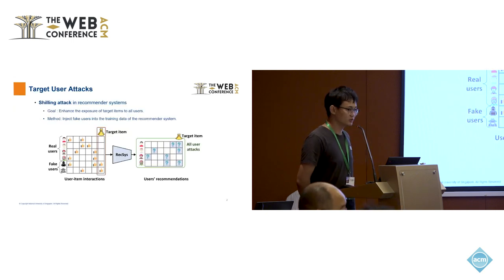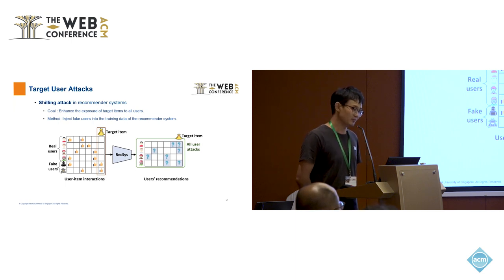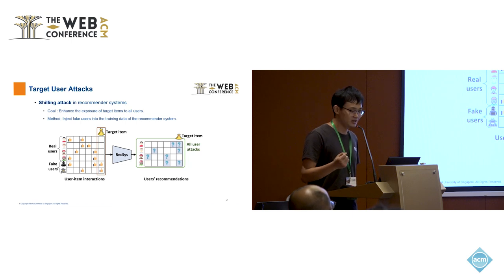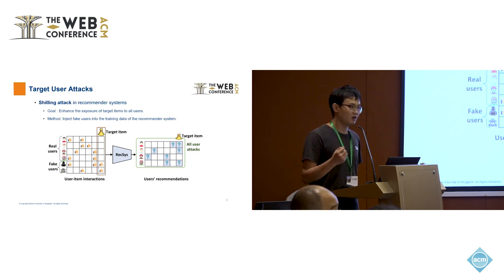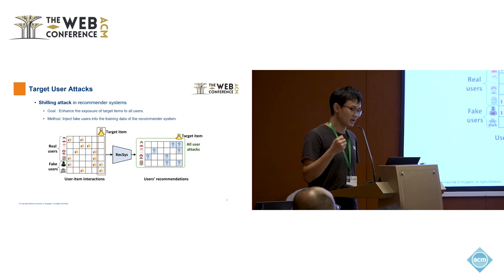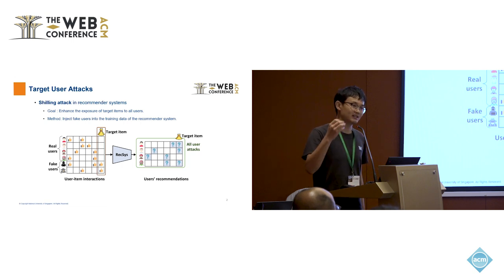Let me first introduce the task called Shilling Attack. Shilling has a long history in recommendation systems. The goal is to enhance the exposure of some target item to all users. From the attacker's view, it's about how we can inject some fake users into the training data of the recommender system, so the recommender system recommends the target item to more users.